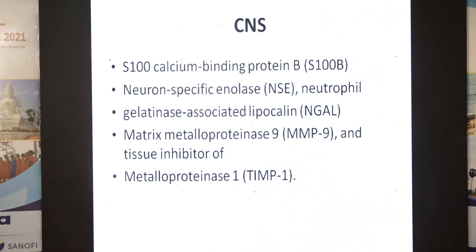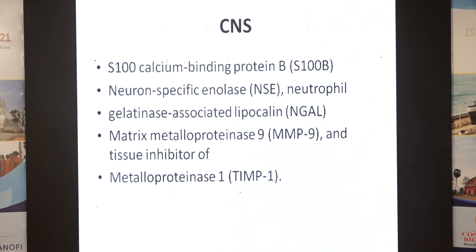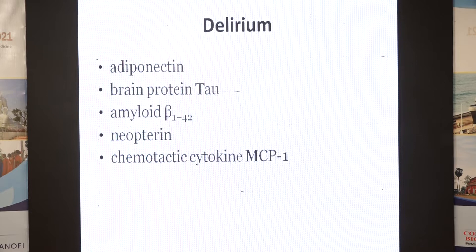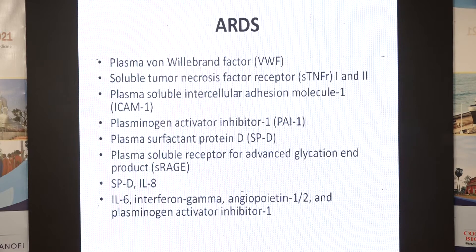There are hundreds of biomarkers available. For CNS, we talk about neuron-specific enolase, S-100B, pentraxin proteins, TIM markers. For delirium — something as simple as determining if a patient is delirious — people now want to check adiponectin and brain proteins. For ARDS, proteomics define subclasses. There are S-rays, PAI, TNF, vWF, IL-6, IL-8.